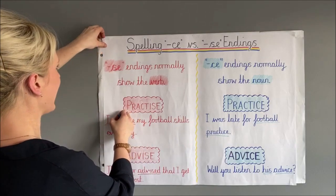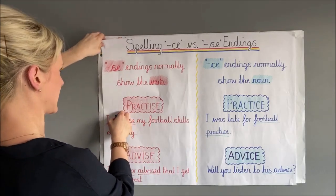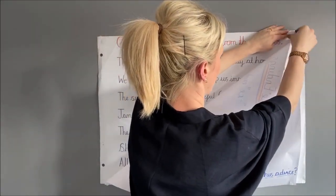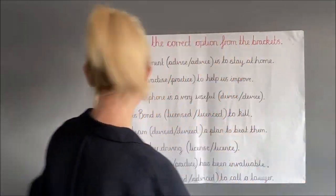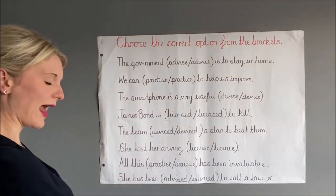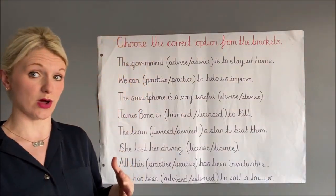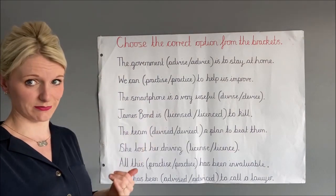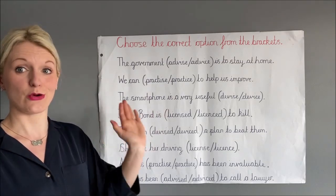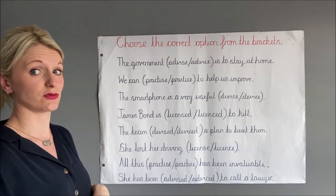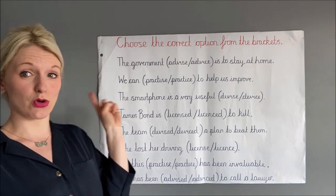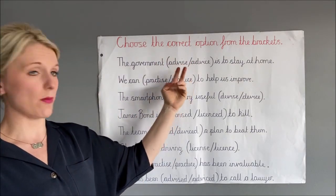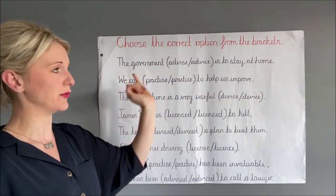Now let's have a look at your challenge. The best way to get used to using these is to use them in lots of different sentences to get used to which ones go where. I have written eight different sentences. There are only a few words that this rule applies to, because there are only a few homophones where there are two different versions with either an SE or a CE ending, and the ones I've used are the most common ones. What you need to do is choose the correct form of the word — the correct homophone from the brackets.